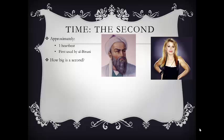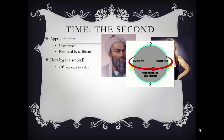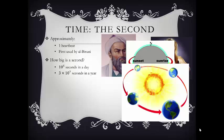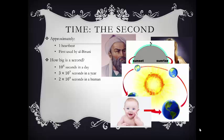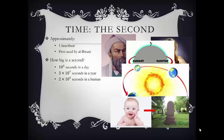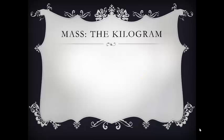How big is a second? There are about 10 to the 5th seconds in a day, so one day is around 100,000 seconds. There are about 3 times 10 to the 7th seconds in a year, or 30 million seconds. And there are about 2 times 10 to the 9th seconds in a human lifetime — so it takes about 2 billion seconds to go from birth to death. As soon as you think about this, you start counting them, and I've just spent 30 seconds talking about seconds. The good news is I'm much closer to the end of my 2 billion than you all are.